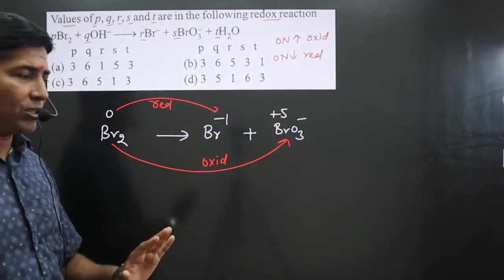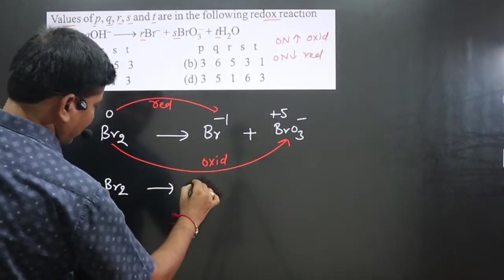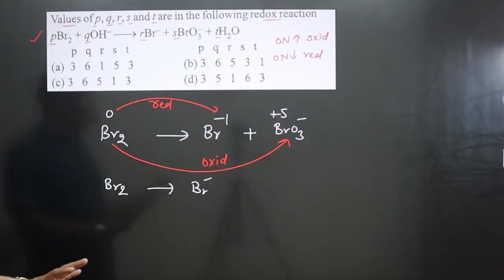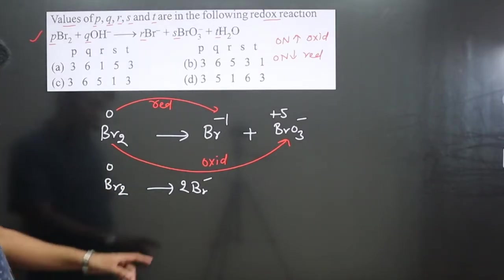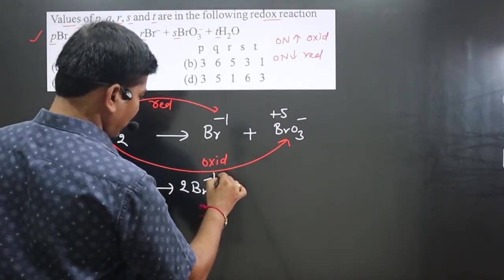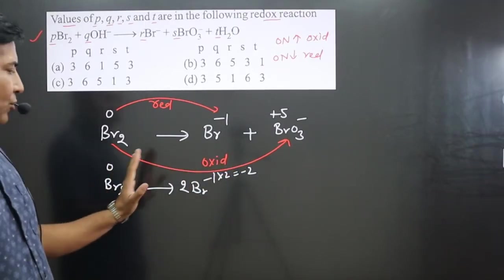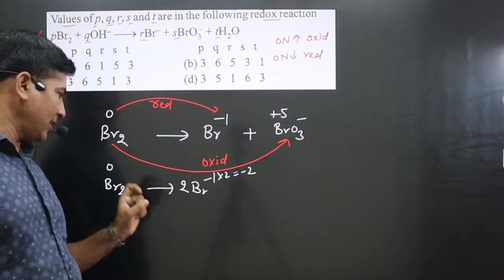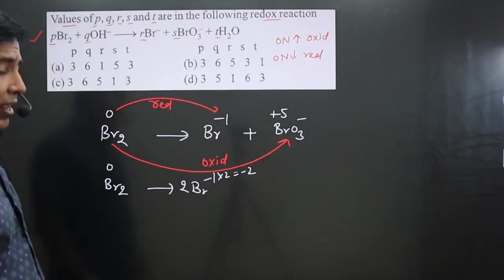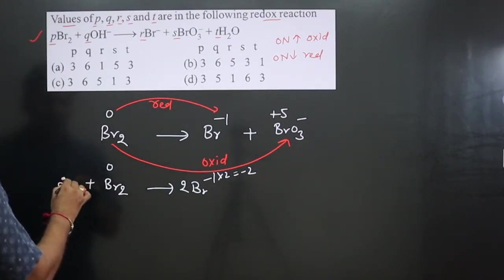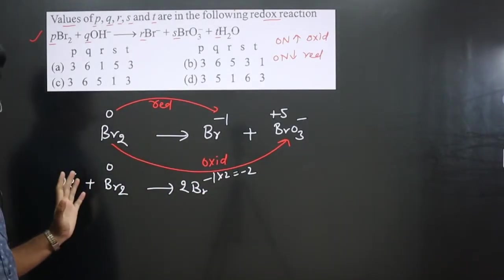We have to write both half-equations separately and then balance. First half-equation: Br₂ → Br⁻. Always balance the number of atoms before balancing the charge. So 2Br on left, multiply Br⁻ by 2 on the right. The total oxidation number goes from 0 to −2, a difference of 2. This is a reduction reaction — decrease in oxidation number — so we add 2 electrons on the left side: 2e⁻ + Br₂ → 2Br⁻.